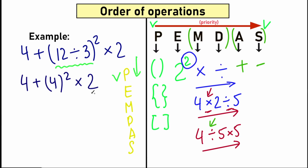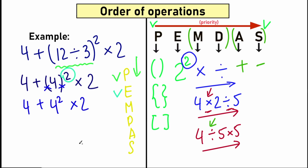The next step is exponents — E. We have an exponent: 4 raised to the power of 2. We can get rid of the parentheses since we only have 4 inside, and write 4 squared times 2. So we calculate 4 squared equals 16, giving us 4 + 16 × 2.